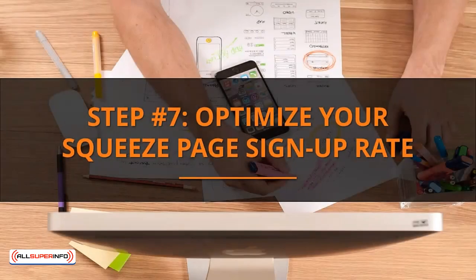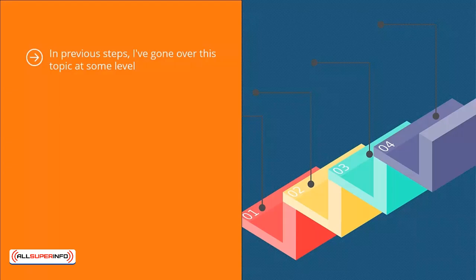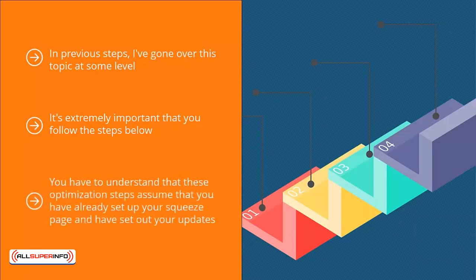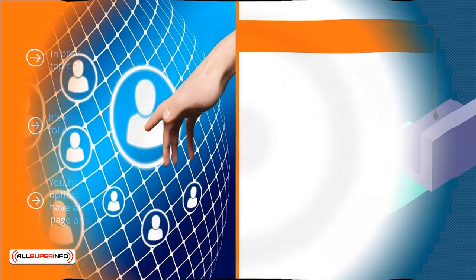Step number seven: optimize your squeeze page signup rate. In previous steps I've gone over this topic at some level, but optimizing your squeeze page plays a critical role in the success of your mailing list campaigns. You need to go through specialized steps to ensure your optimization efforts are correct. These optimization steps assume that you have already set up your squeeze page and have sent out updates, and have already optimized your squeeze page at some level. Here are further optimization ideas to try to maximize the conversion ability of your email list recruitment page.